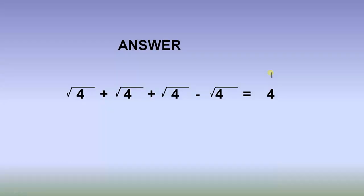Now here are the answers. The square root of 4 plus the square root of 4 plus the square root of 4 minus the square root of 4 equals 4. Now let's see how this works.